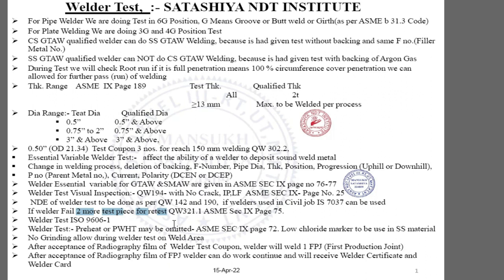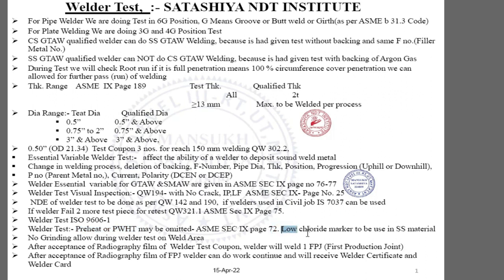If following ISO code, the applicable standard is ISO 9606-1. During the welder test, if production joints require preheating or PWHT, preheating or PWHT can be omitted during the test because it is given in ASME Section 9 — preheating or PWHT is not a mandatory requirement during the welder test.